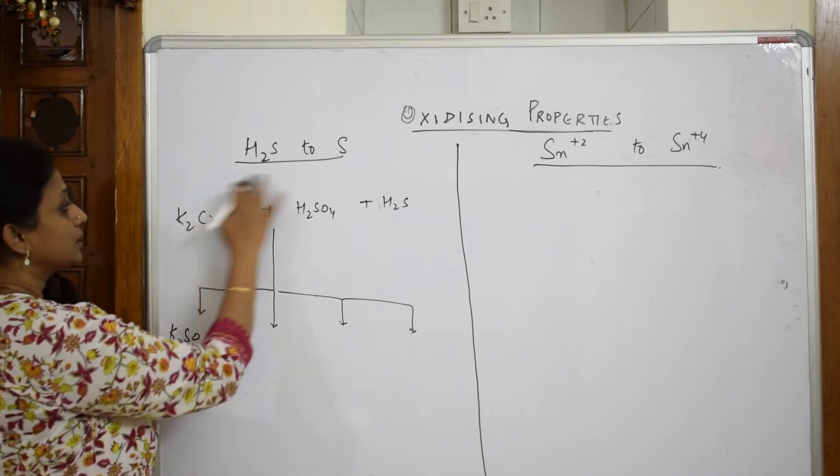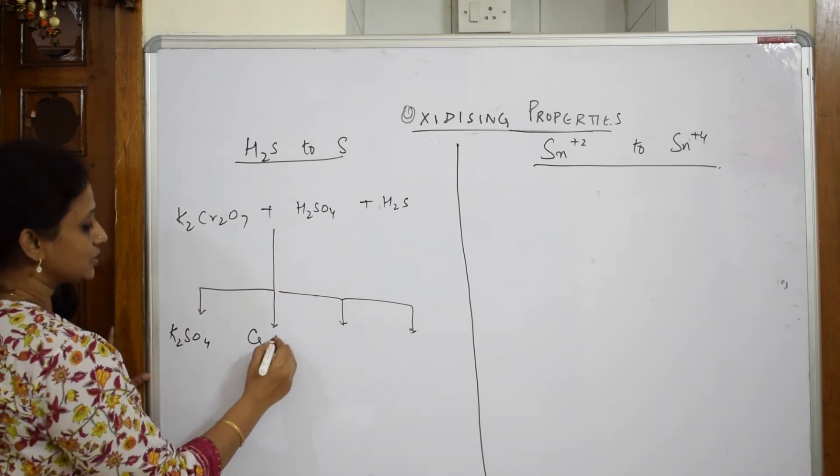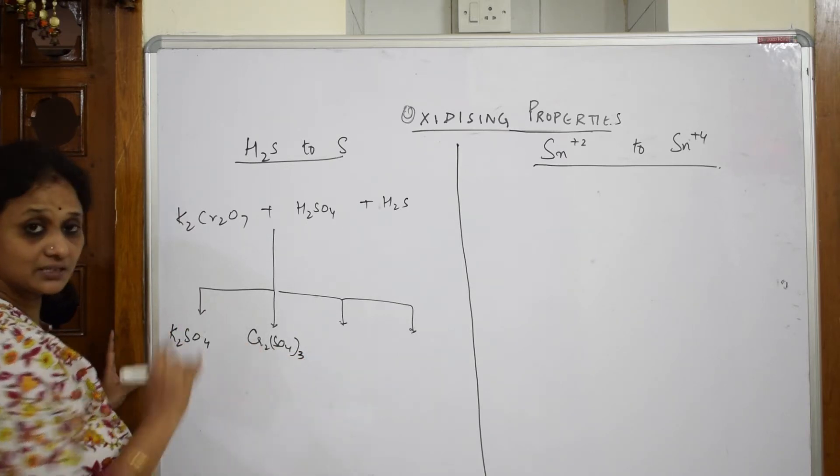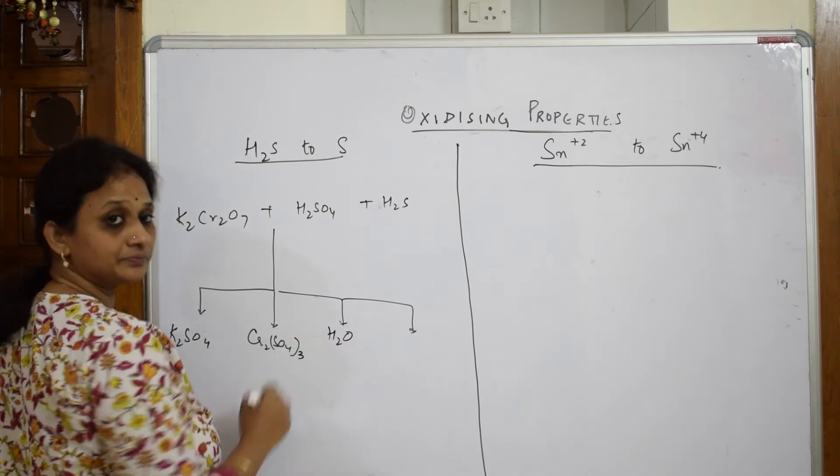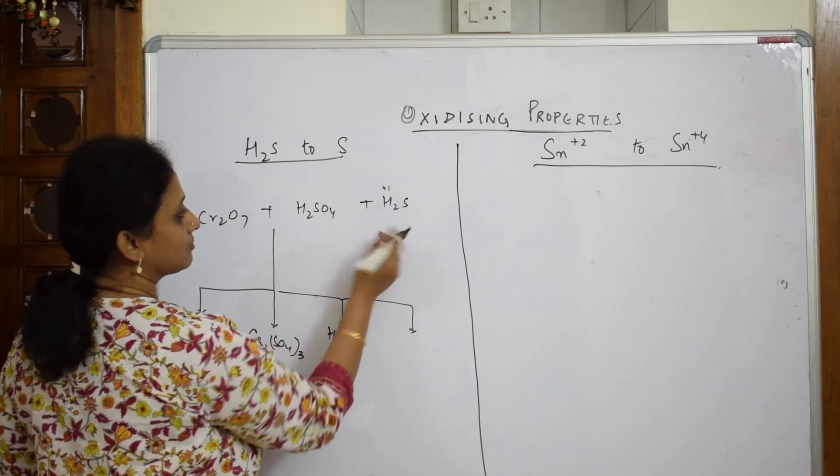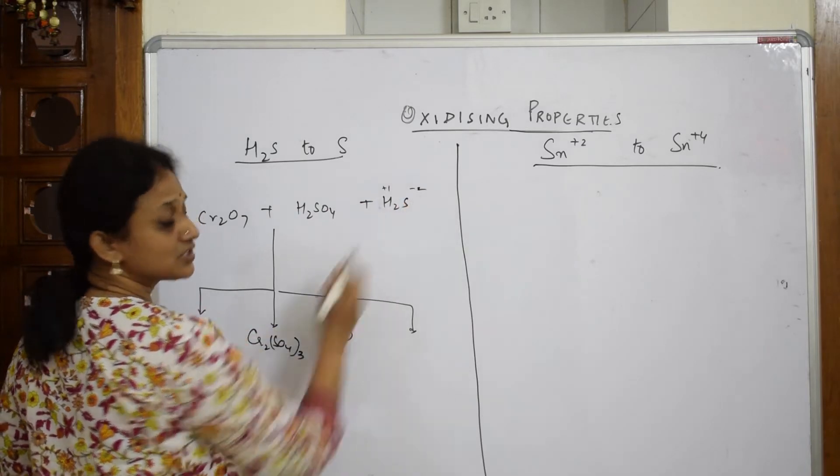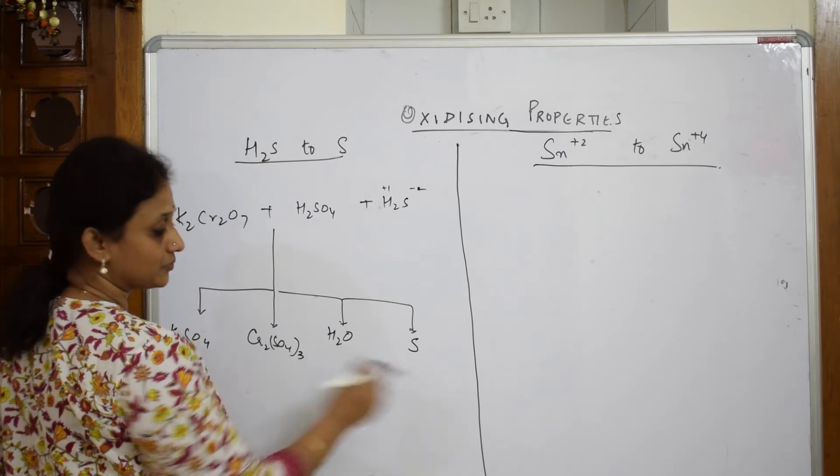K₂SO₄, it's the same as I said in the earlier video. Cr₂(SO₄)₃, this is 3. Sulfate valency 2, chromium valency 3. Apart from that water and hydrogen sulphide, here it is 1, 1 into 2 this is minus 2. This is going to get oxidized to sulphur atom. This is your important thing.